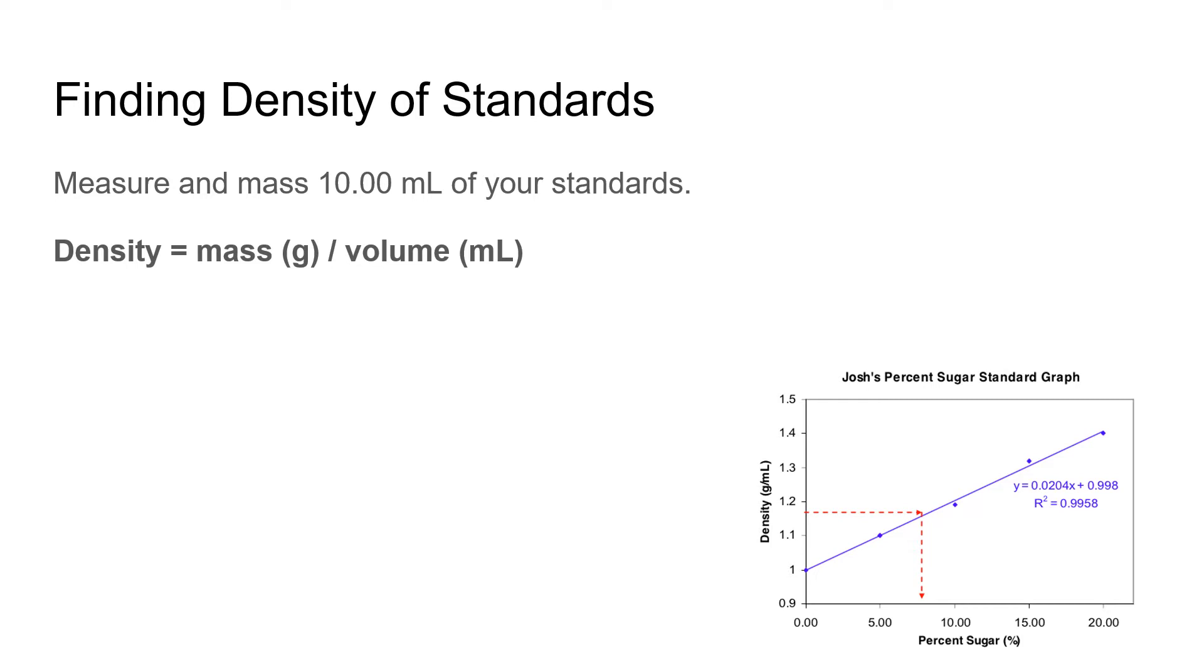To find the density of the standards you're going to weigh out ten milliliters, and then you can divide that mass by the ten milliliters of volume and you can get your density of each of the standards. Then you can make your calibration curve where the percent sugar will be on the x axis and density will be on the y axis.